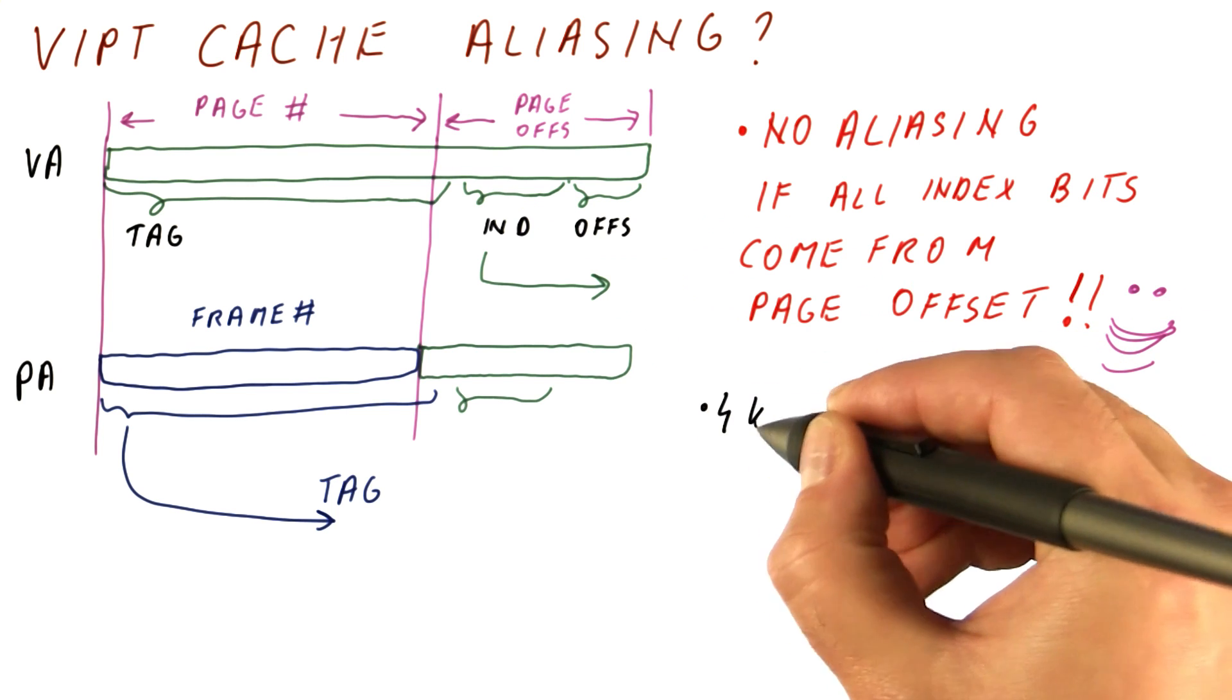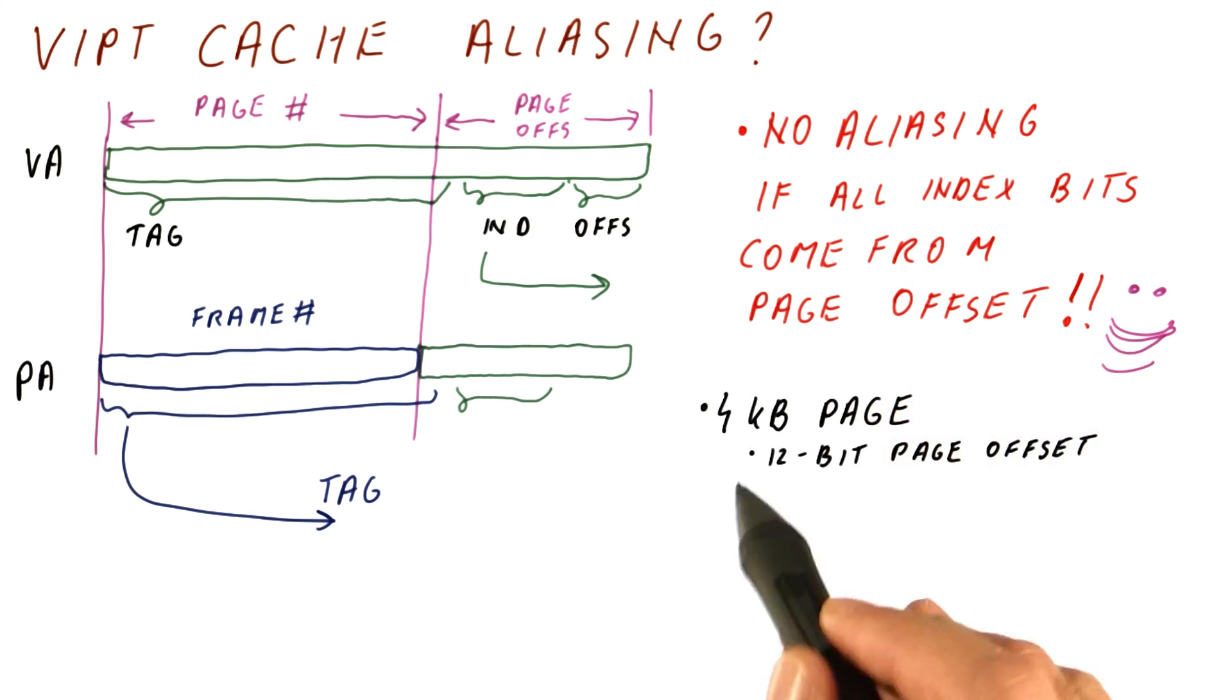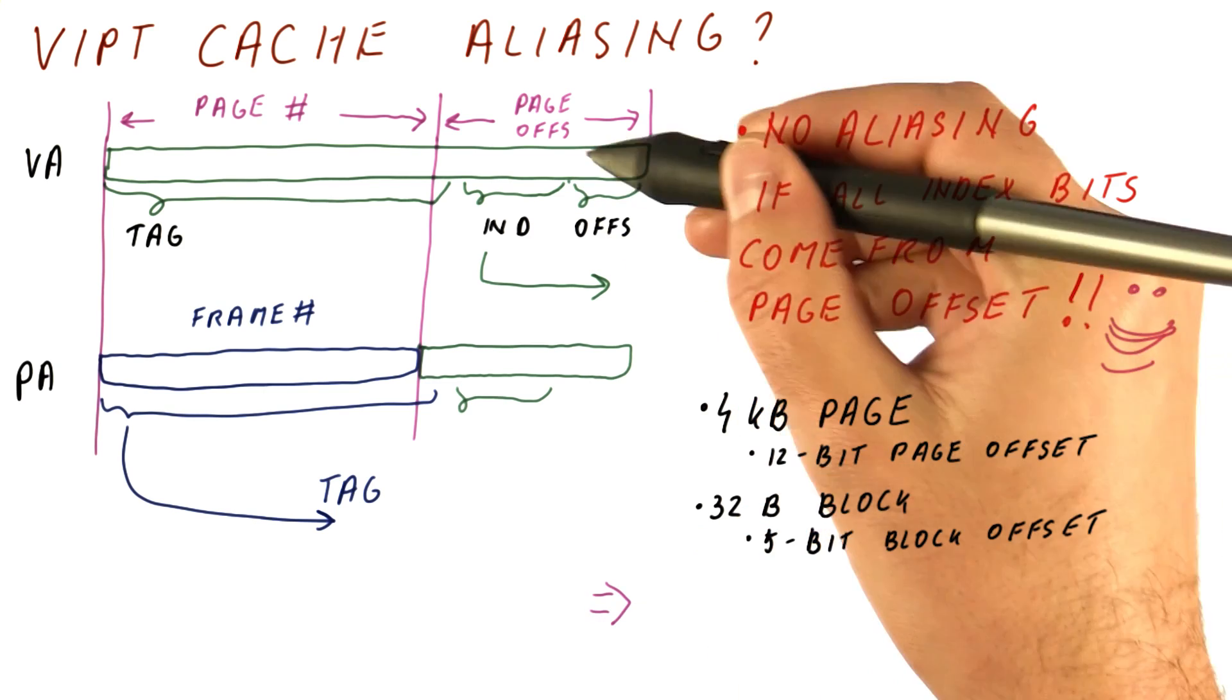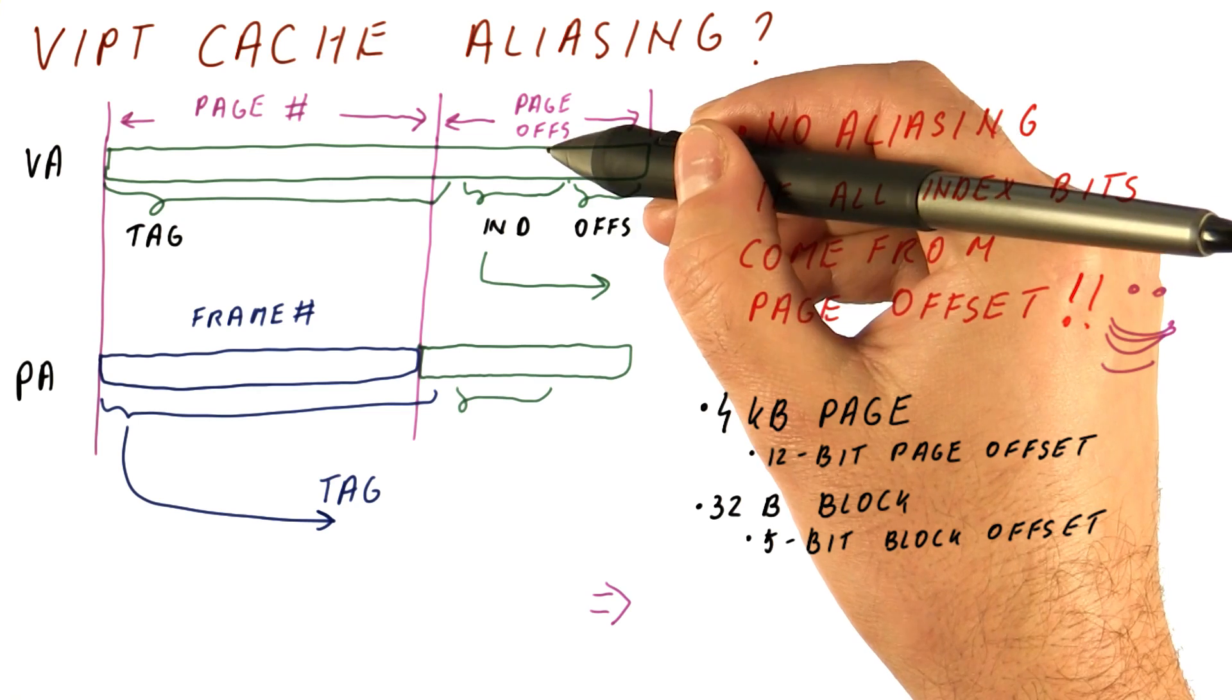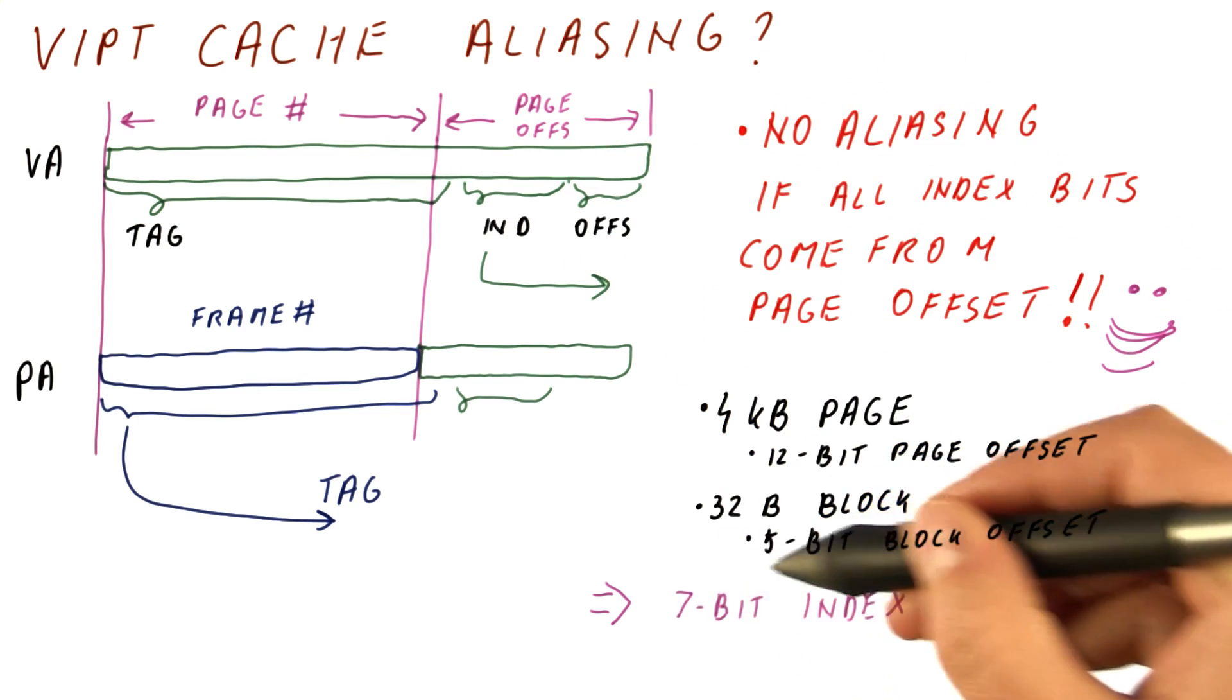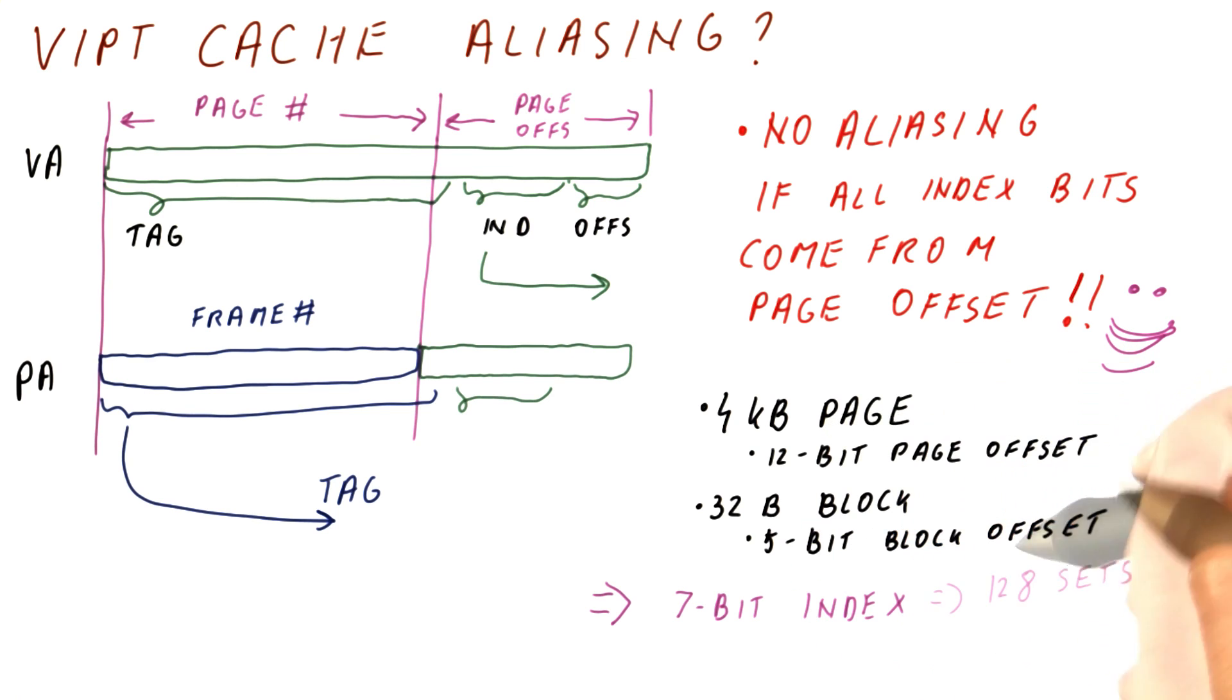if we have a 4 kilobyte page, we would have a 12-bit page offset. If our cache has a 32-byte block, it has a 5-bit block offset here. That means that the index, which still needs to fit in the 12 bits of the page offset, can only have 7 bits. So we can only have 128 sets in this cache, which limits its size.